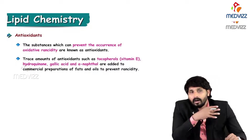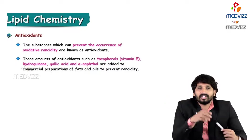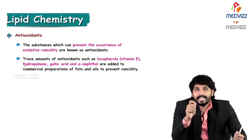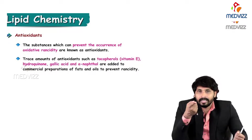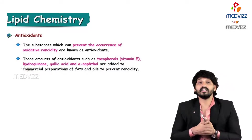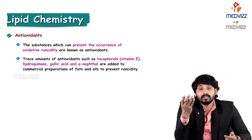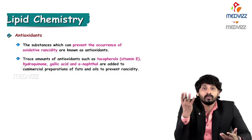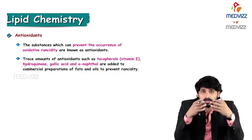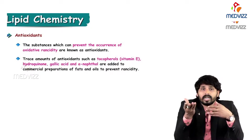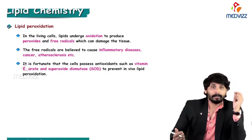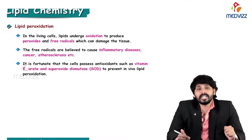To prevent the process of rancidity, all commercial oils now have antioxidants mixed in - you can see this in vegetable and cooking oils. Antioxidants prevent oxidative rancidity in TAG and restore the natural activity of TAG. Known antioxidants include tocopherols, vitamin E, hydroquinone, gallic acid, and alpha-naphthol. Whenever you go through the composition of any vegetable oil on the box, you will find these antioxidants listed.